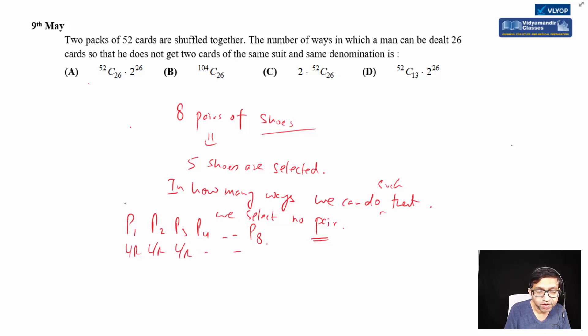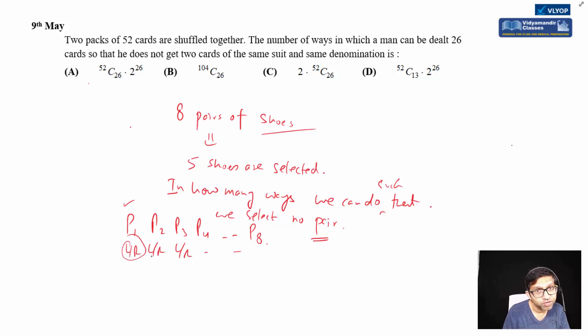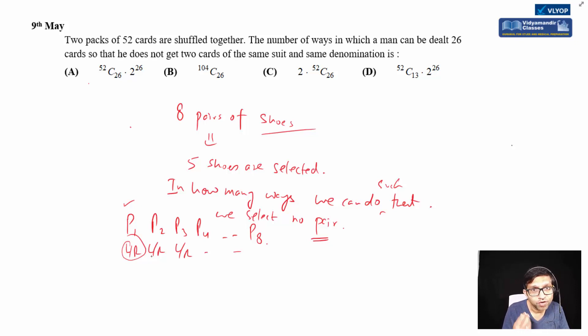This means the five shoes must all belong to different pairs — no matching left and right from the same pair. In how many ways can we select five shoes such that they belong to different pairs?